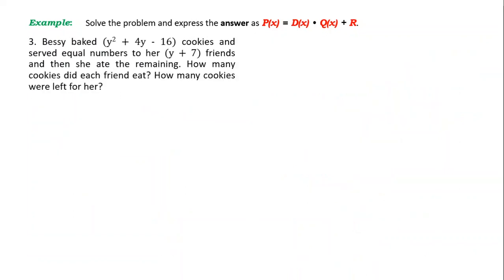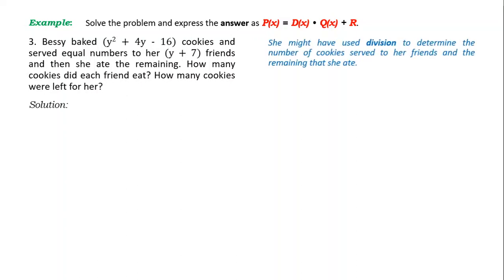Next, sample number 3. Bessie baked y² + 4y − 16 cookies and served equal numbers to her y + 7 friends, then she ate the remaining. How many cookies did each friend eat? How many cookies were left for her? Division is used to determine the cookies served to friends and the remaining that she ate.